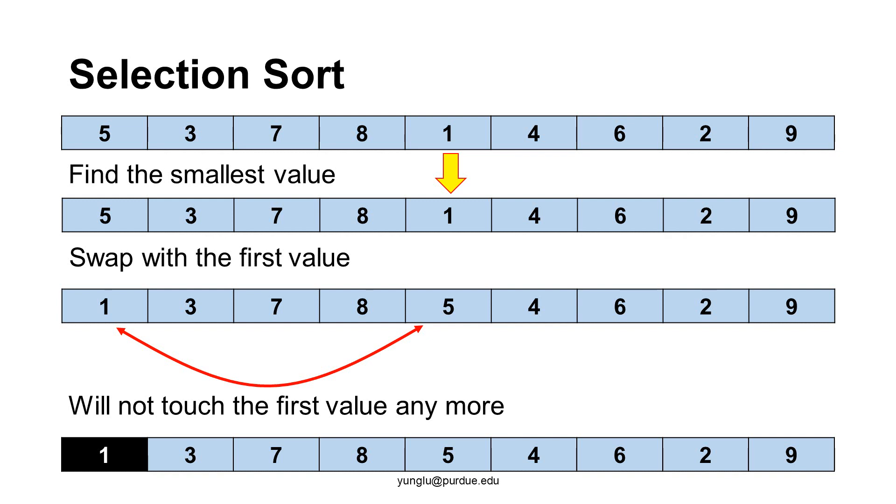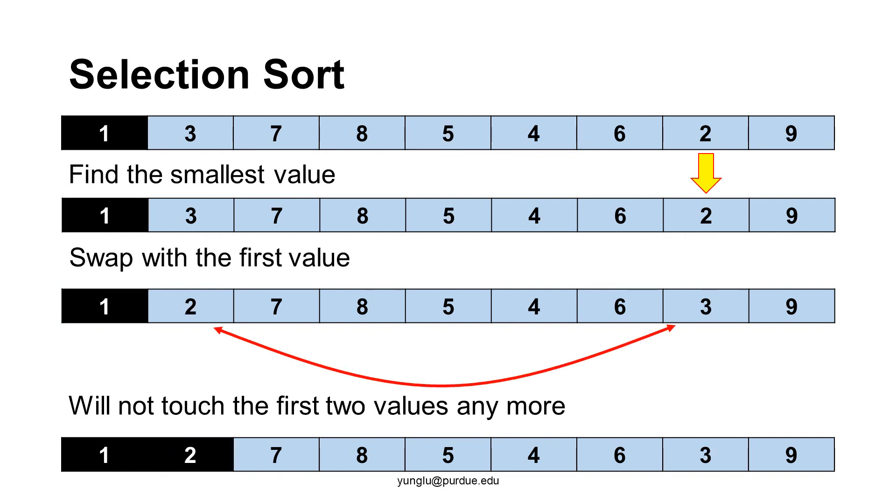We will not touch the first element again. In the next iteration, the first element is excluded. We find the smallest value. If this value is not the second element, swap the two elements.